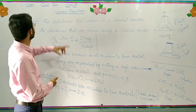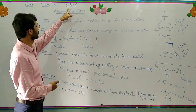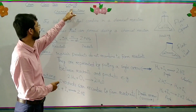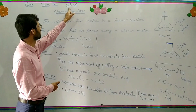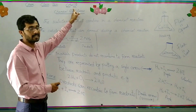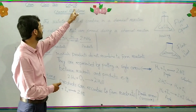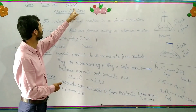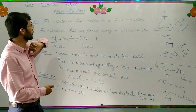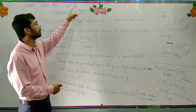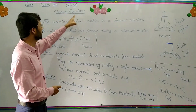Today's topic is about Chemistry in class 10, chapter number 9. Chapter number 9 is the first chapter in class 10. We have already read chapters 1 through 8 in class 9, and chapter number 9 begins class 10. The name of chapter number 9 is chemical equilibrium, and our today's lesson is about chemical reactions.